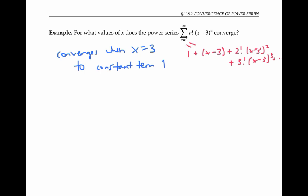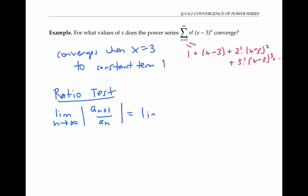But let's see what other values of x it converges for. Although we have many tests for convergence in our toolkit, the ratio test is usually the best test to use to determine where a power series converges. For the ratio test, we need to take the limit as n goes to infinity of the absolute value of the ratio of consecutive terms. For our example, this is (n+1)! times (x−3)^(n+1), divided by n! times (x−3)^n.